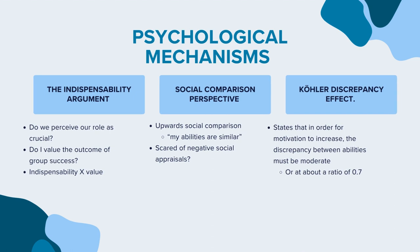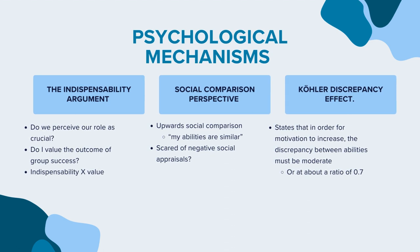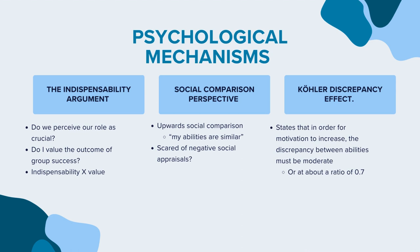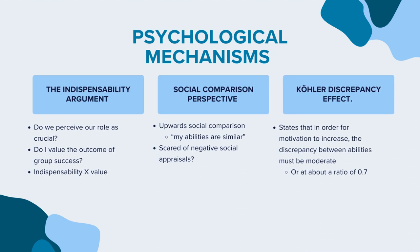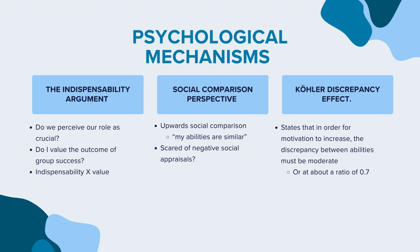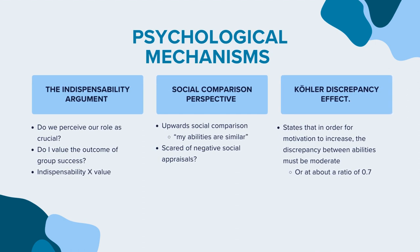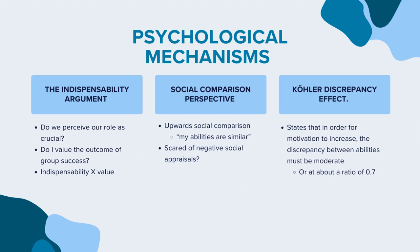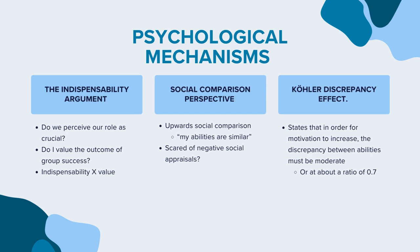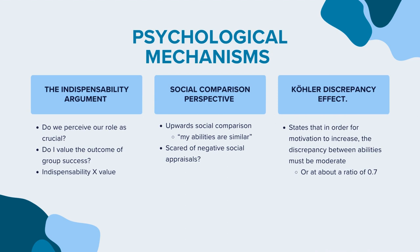Another explanation comes from social comparison. Upward social comparison refers to us comparing ourselves upwards to a person of greater ability. If the abilities of the mountaineers are moderately different, or about a ratio of 0.7, the weaker mountaineer would evaluate their abilities as similar to a more competent member, thereby producing a motivating effect. On the other side of the coin, maybe we are scared of negative social consequences of failing the group task, therefore we seek positive social appraisals, generating an increase in motivation.